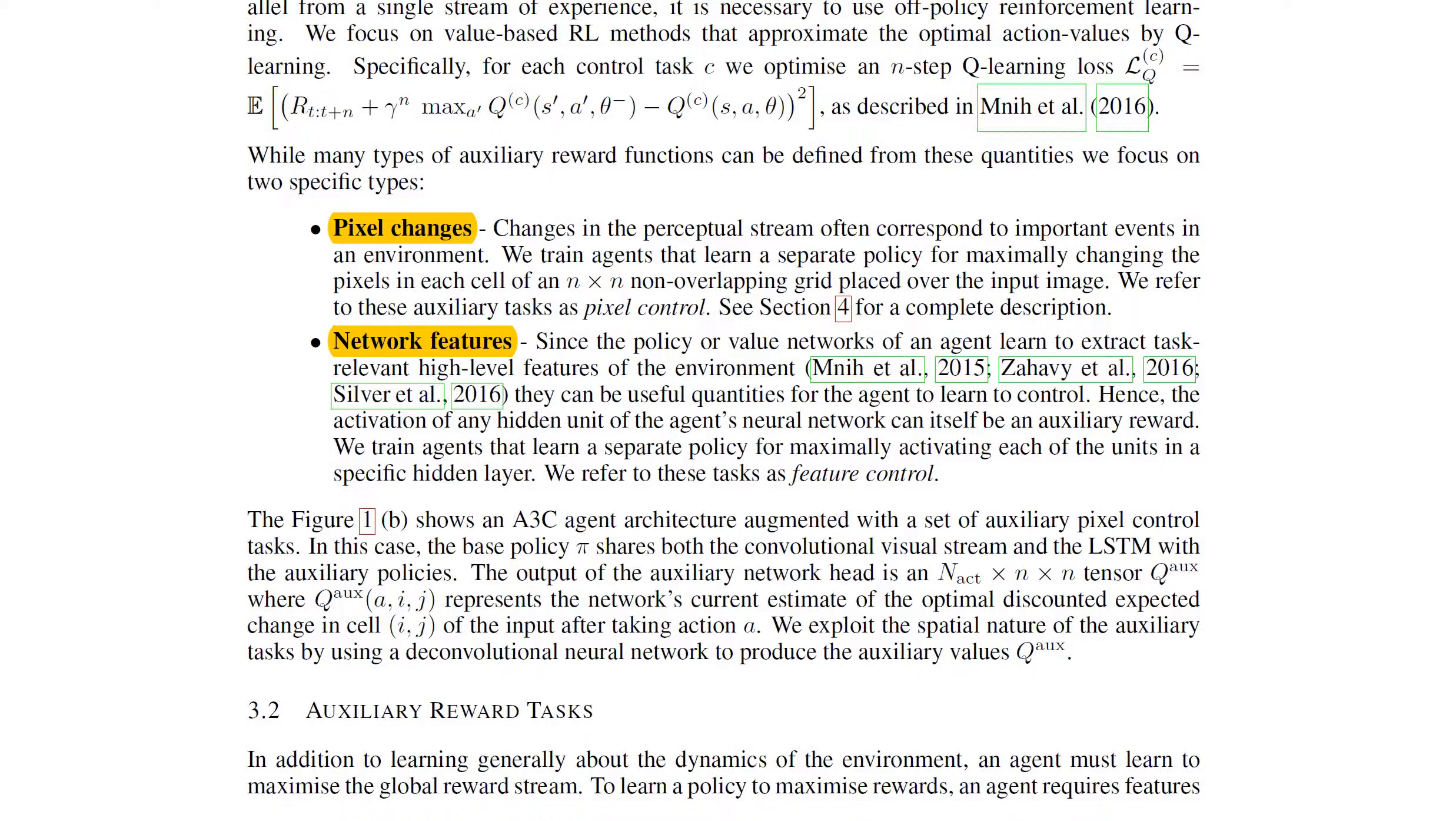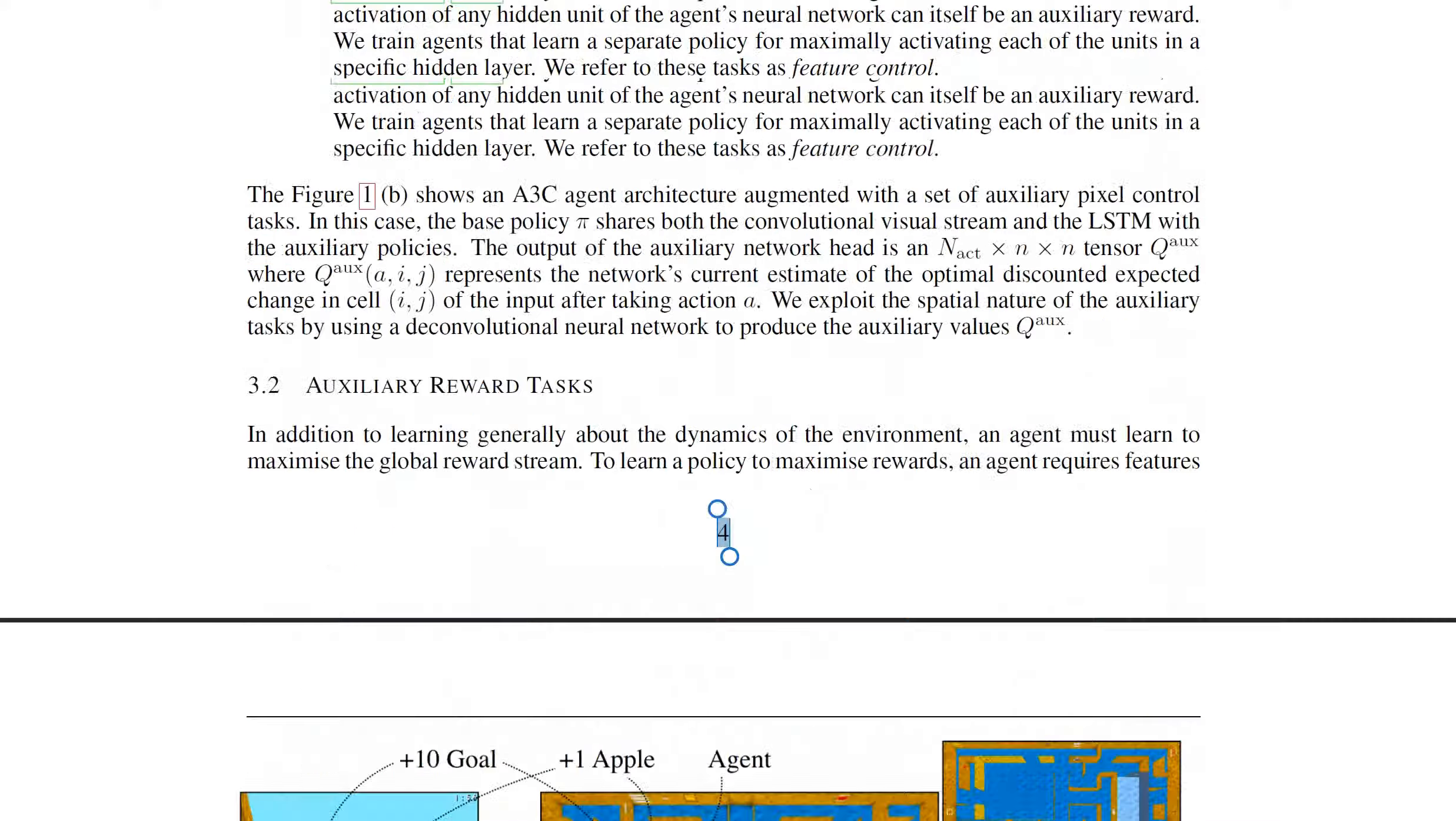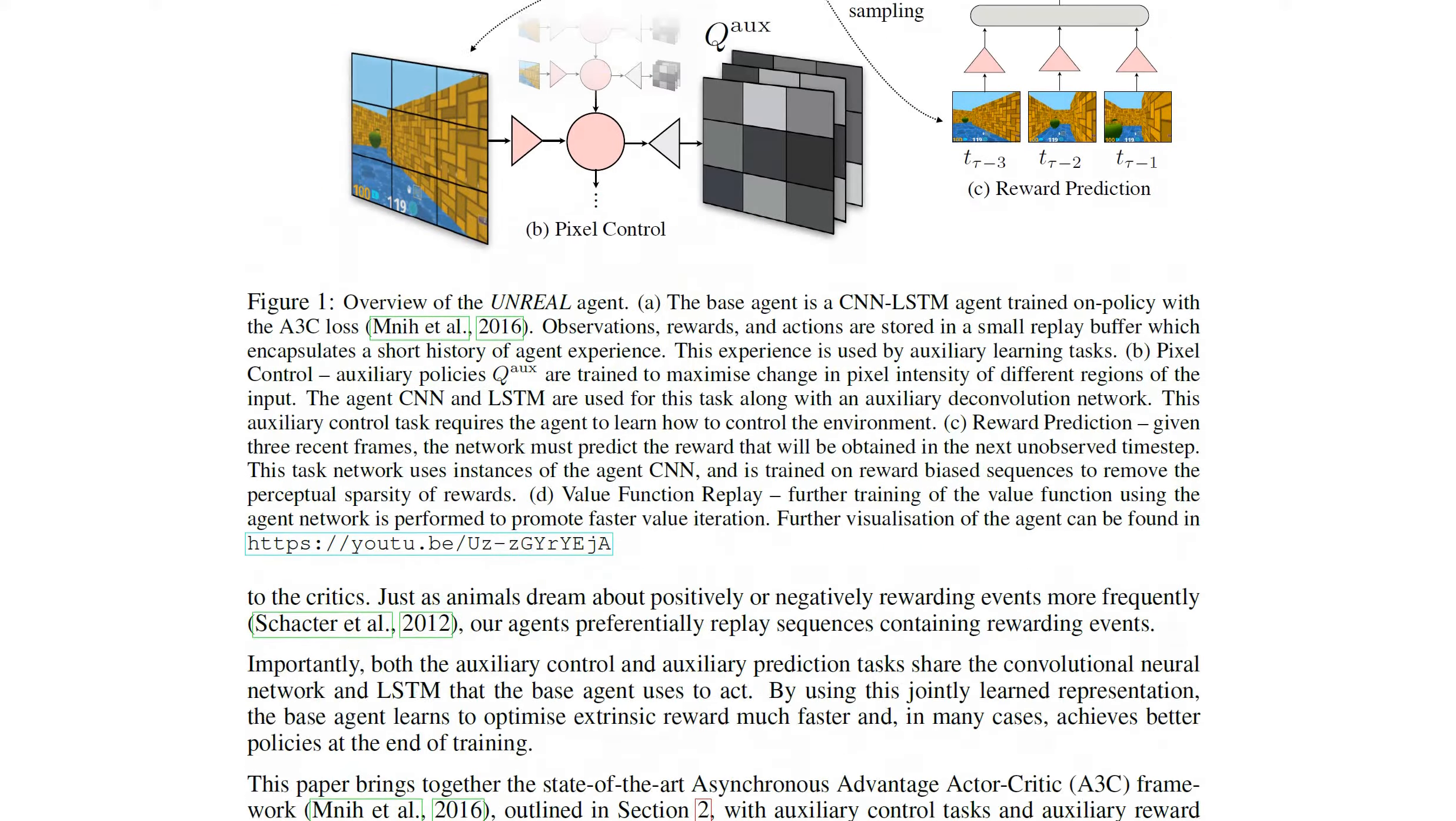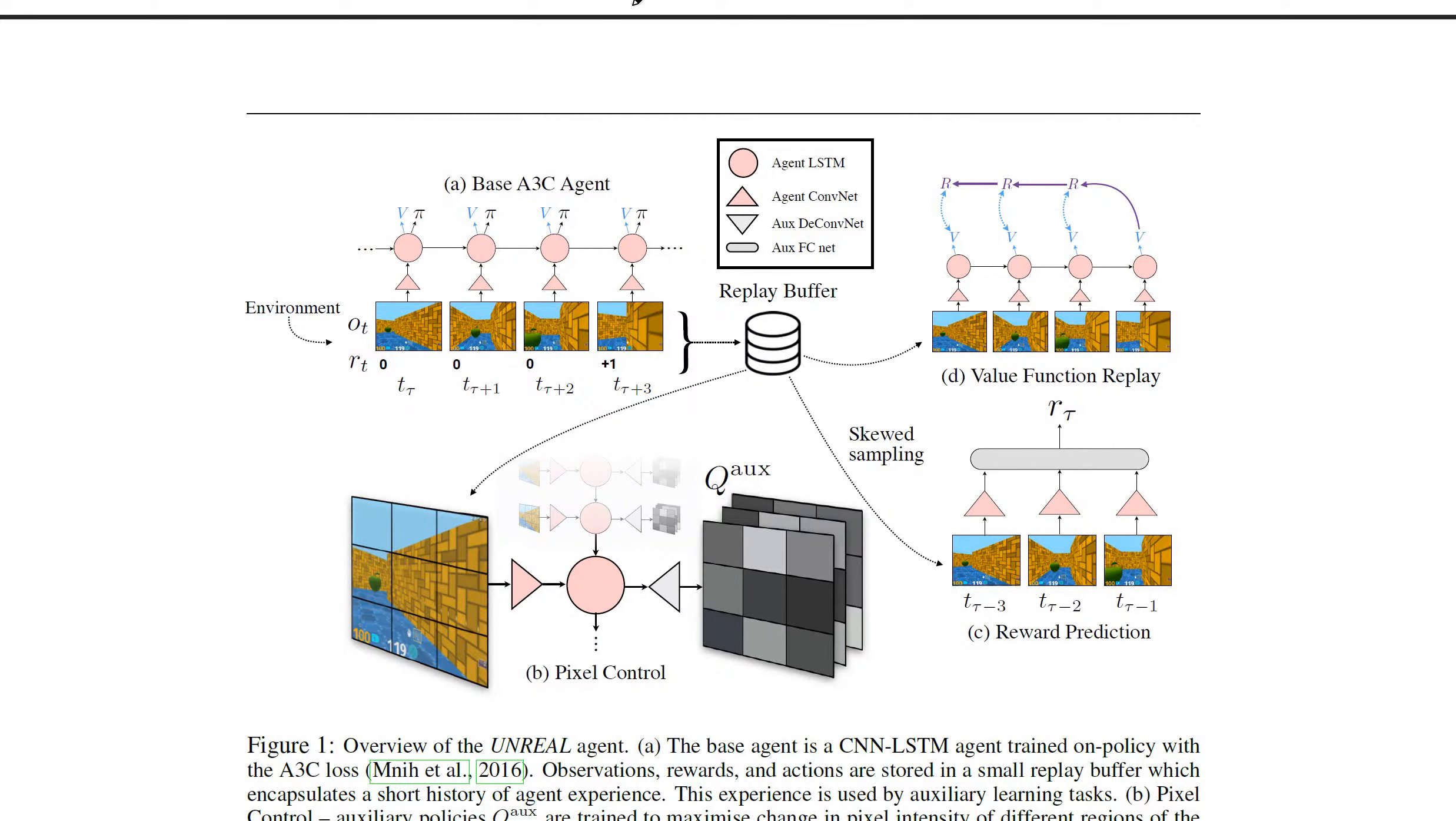So these are the two tasks they propose. In addition, they also do a lot of other things. On the top left, you can see here you have a base A3C agent, meaning it's an actor-critic. You learn a policy and you learn a value network. Just consider this a standard reinforcement learning agent. You feed its experience into a replay buffer, and out of the replay buffer you do many things.